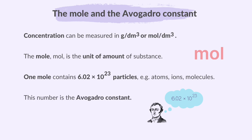One mole contains 6.02 × 10²³ particles. Those particles can be atoms, ions, or molecules. This number is the Avogadro constant. For example, one mole of carbon contains 6.02 × 10²³ atoms of carbon, and one mole of carbon dioxide (CO₂) also contains 6.02 × 10²³ molecules of carbon dioxide. So, one mole of any substance contains the Avogadro constant.